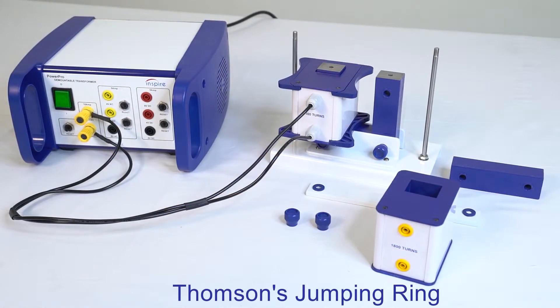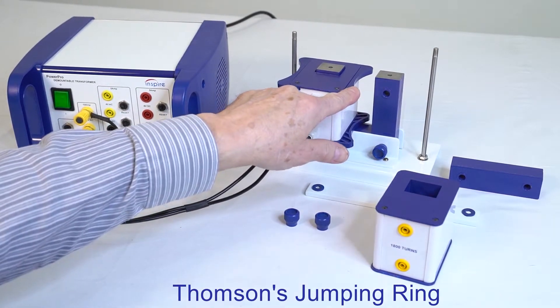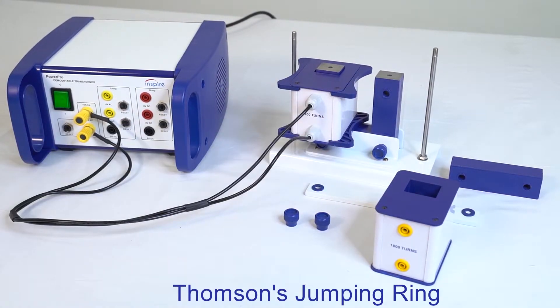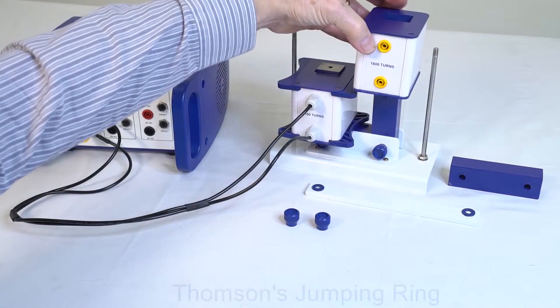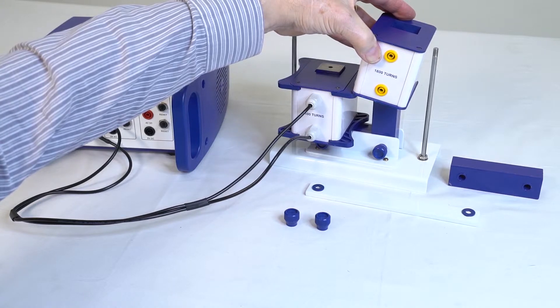For the induction experiments it is traditional to use a mains powered coil. This is available if required. The substitute mains coil has wings which provide a high level of safety, preventing the fitting of an inappropriate coil which might generate dangerous voltages.